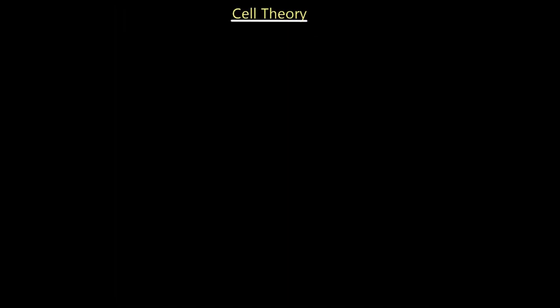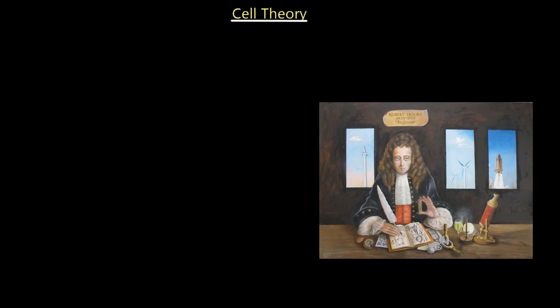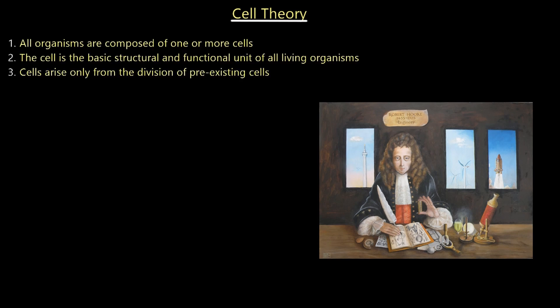So let's talk about cell theory first and lay the foundation for biological science. Cell theory was proposed by Robert Hooke, an engineer and scientist who was using the original microscope as we've got here in the image to come up with these three laws and generalizations of living organisms. Number one: all organisms are composed of one or more cells. Number two: the cell is the basic structural and functional unit of all living organisms. And number three: cells arise only from the division of pre-existing cells.